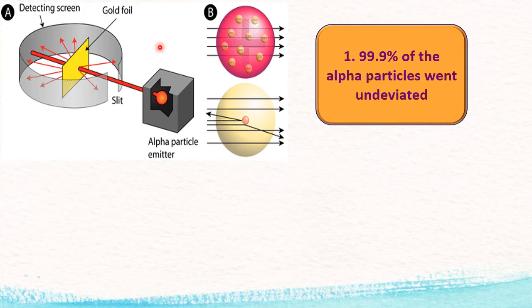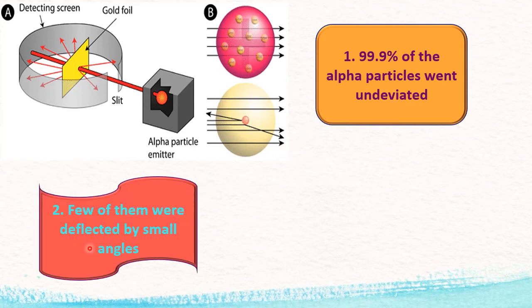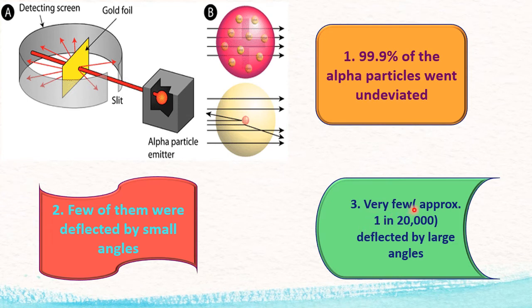This is the first observation: 99.9% of the alpha particles went undeviated, no deflection, straight. Few of them were deflected by small angles. They went and showed deflection at small angles. Third observation was very few. He was so clever and accurate. Using the mathematics of chemistry, he calculated and made a big derivation, which is beyond the level of the textbook. If you are really interested, you can go for BSc Physics, afterwards MSc Particle Physics, and you will enjoy this theory. Very few, approximately 1 in 20,000, deflected by large angles. This is observation number 1, observation number 2, observation number 3. Very few came back or deflected by large angles. After these three observations, what were his conclusions?